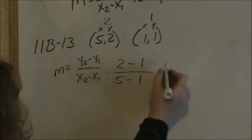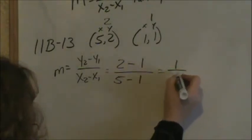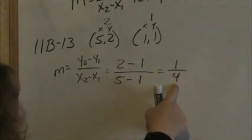So that all over, this is my x value for point 2 minus my x value for point 1, 1. Subtracting this, 2 minus 1 is 1, 5 minus 1 is 4, therefore my slope is 1 fourth.